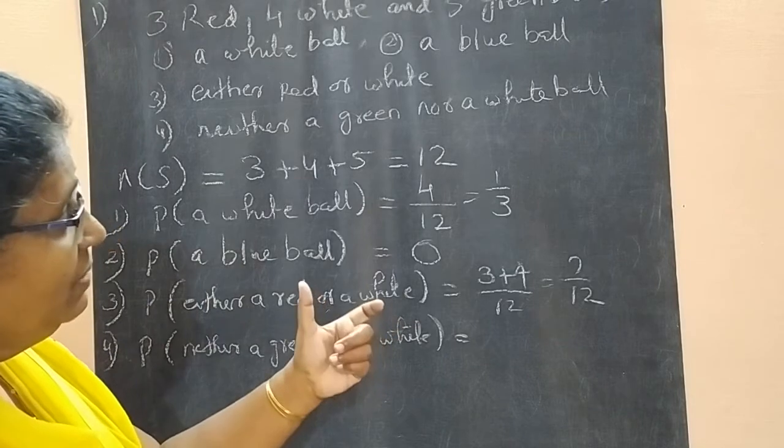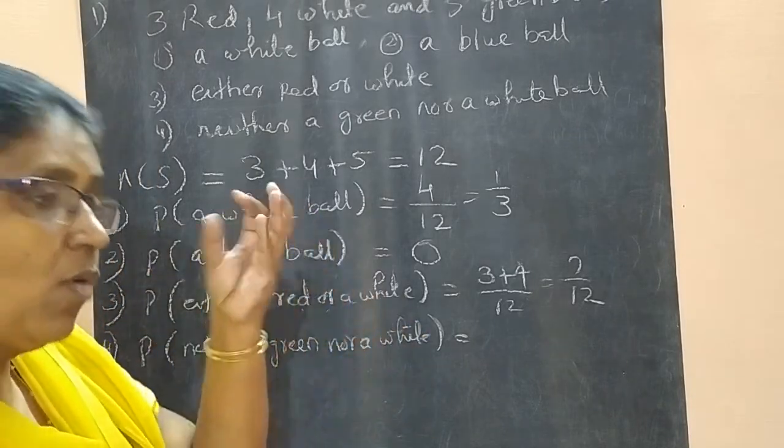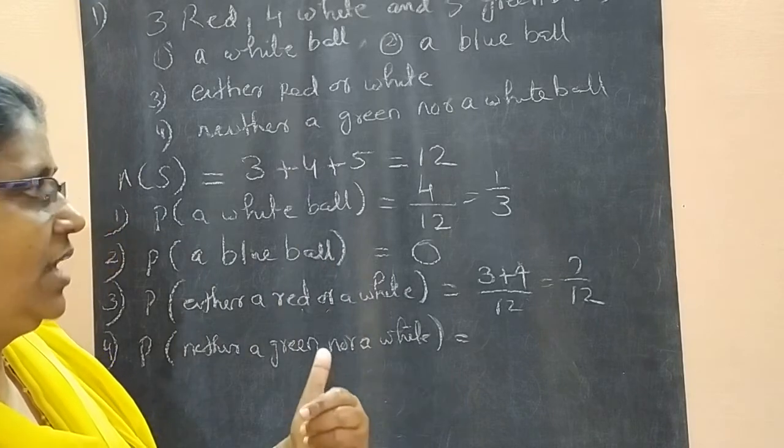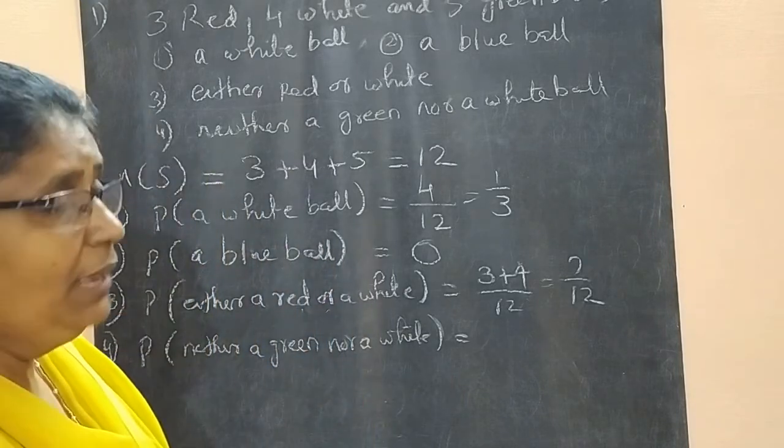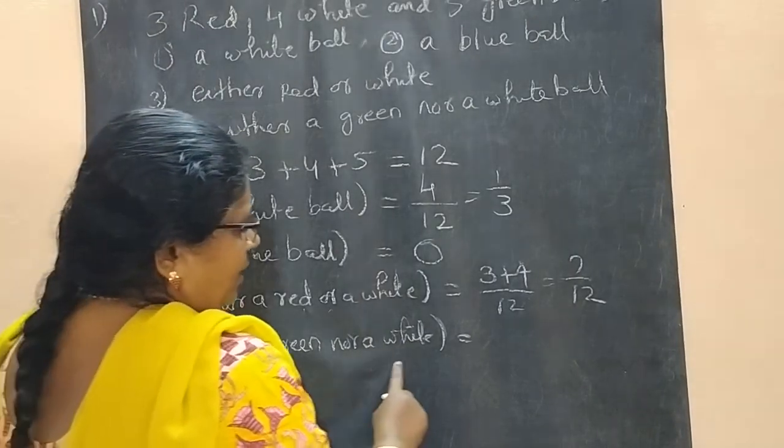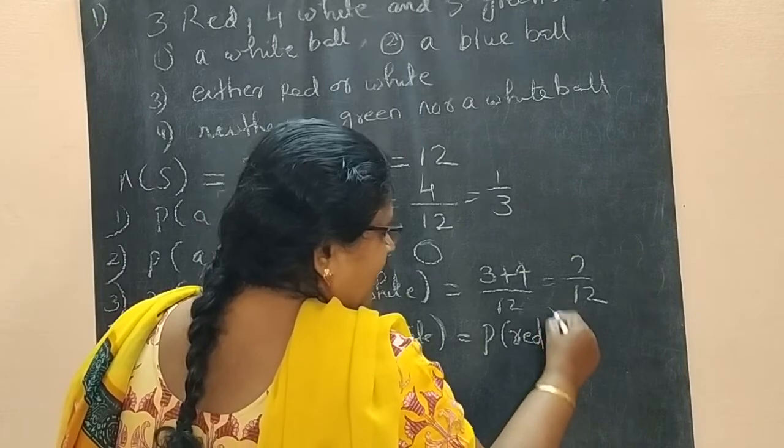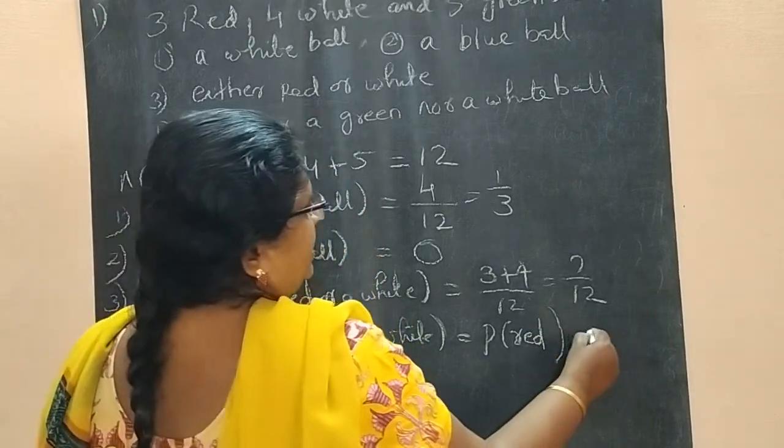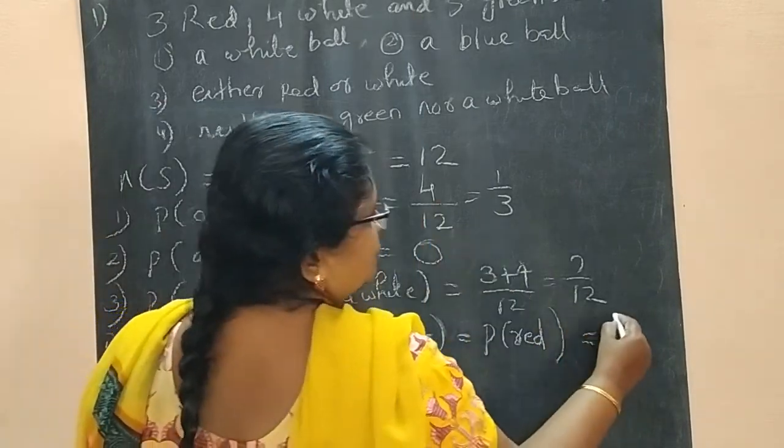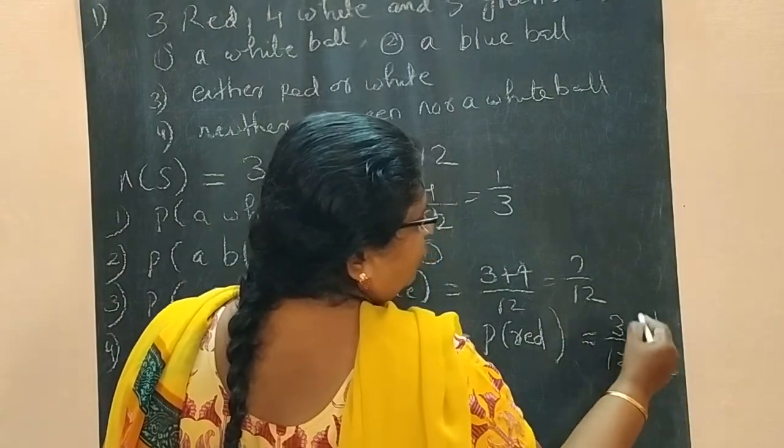So neither means that particular things we don't want. What is remaining, that we want. So here we want only red. So probability of neither a green nor a white means probability of red. How many are there? Red is 3. So 3 by 12, that is 1 by 4.